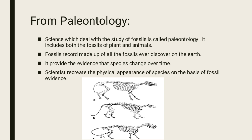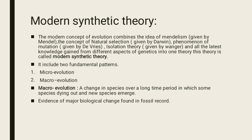The first is the Modern Synthetic Theory. The modern concept of evolution combines the ideas of Mendelism given by Mendel, the concept of natural selection given by Darwin, the phenomenon of mutation given by De Vries, the isolation theory given by Wagner, and all the latest knowledge from different aspects of genetics into one theory. This theory is called the Modern Synthetic Theory.